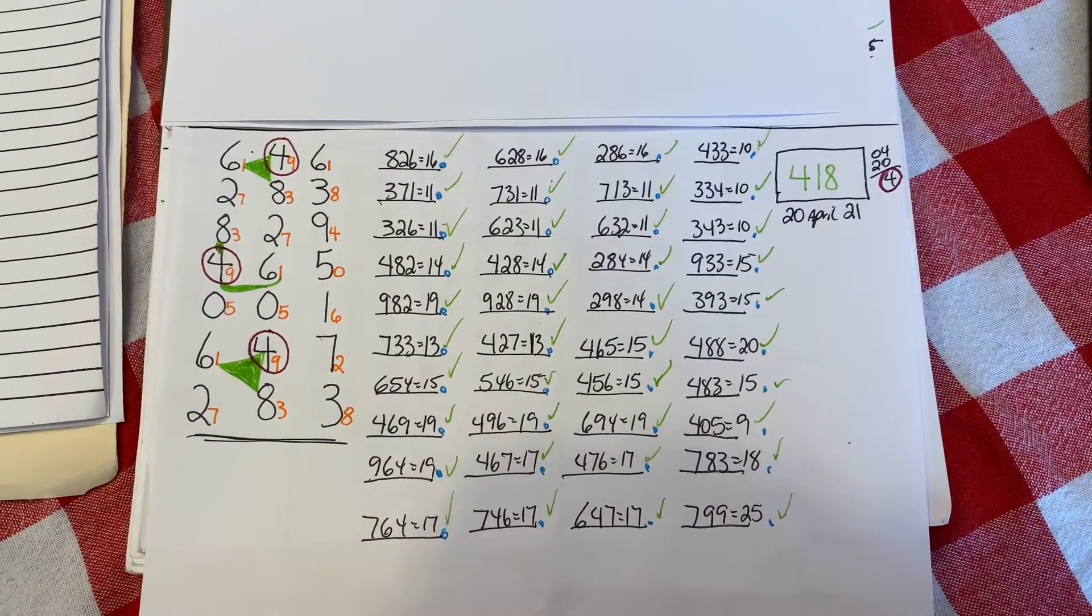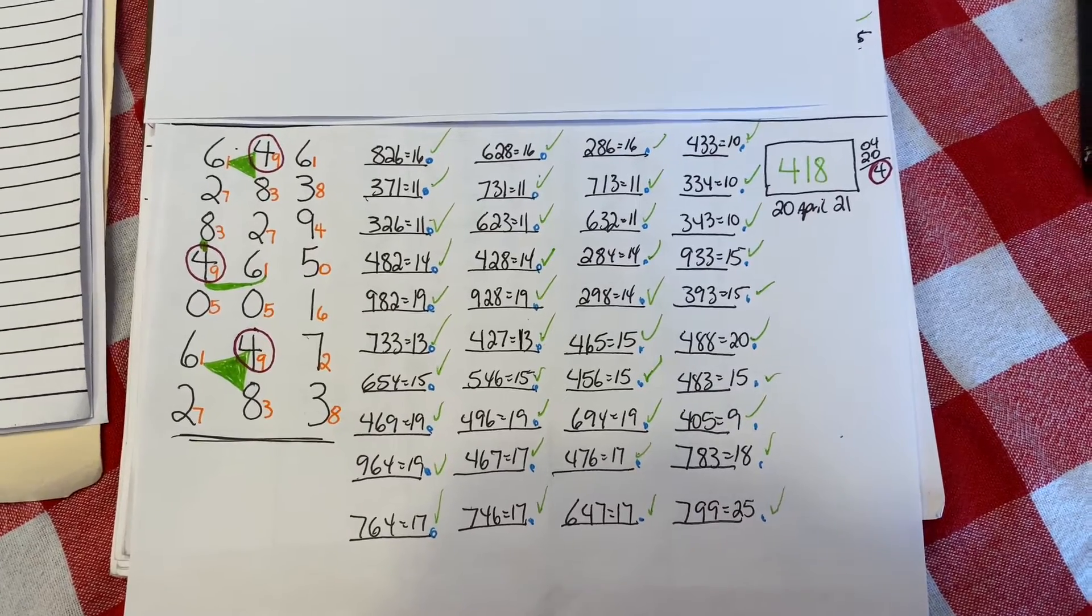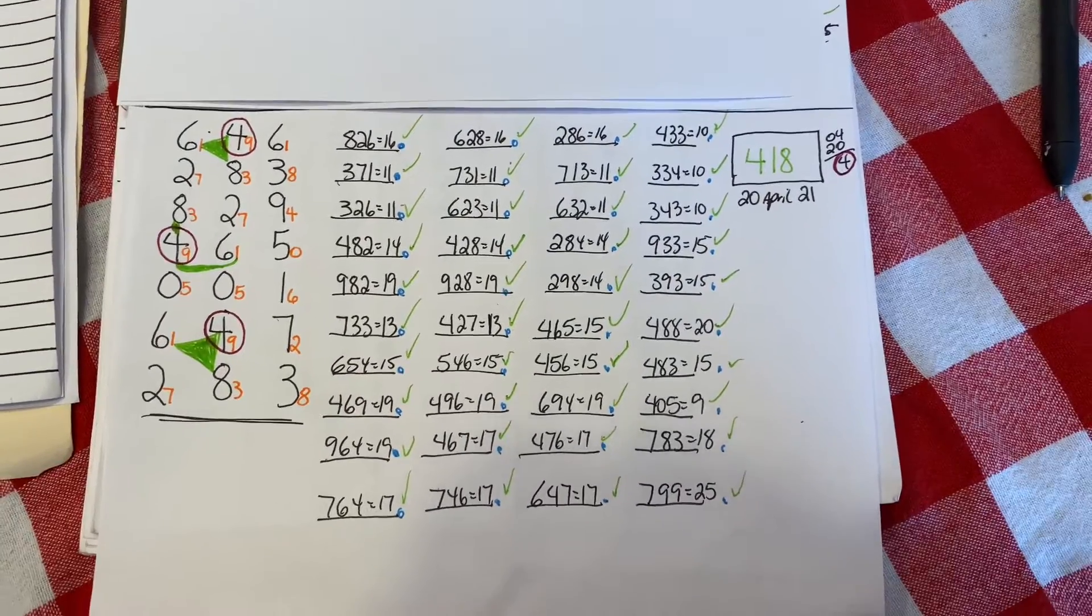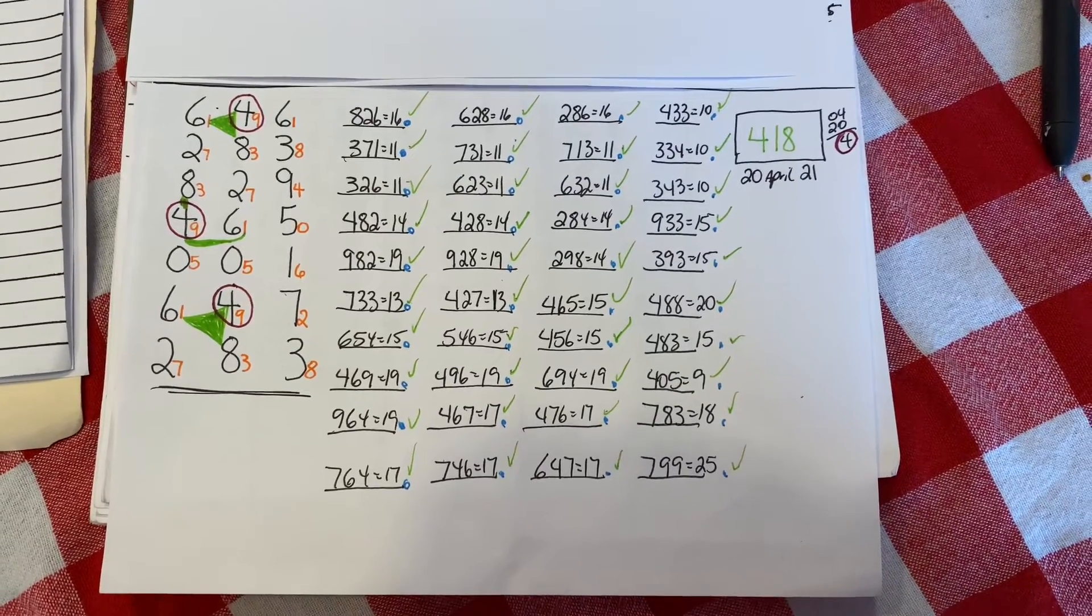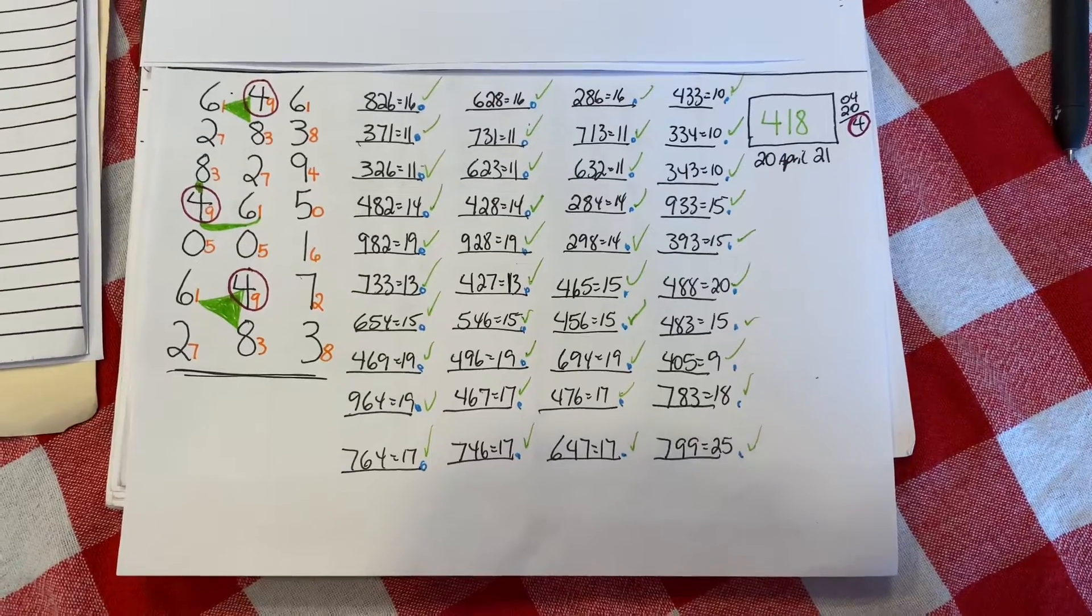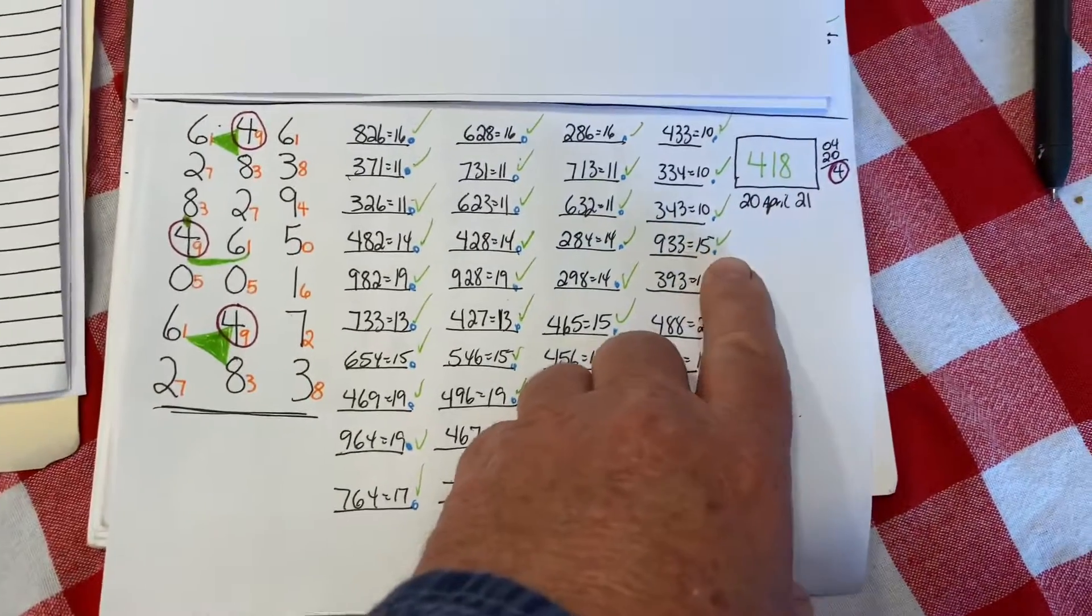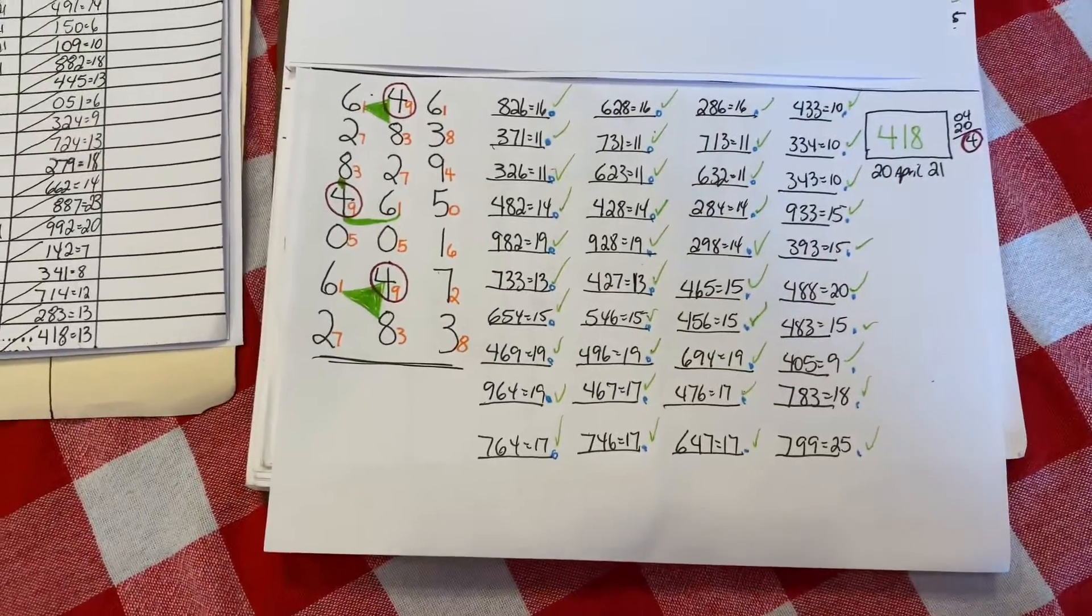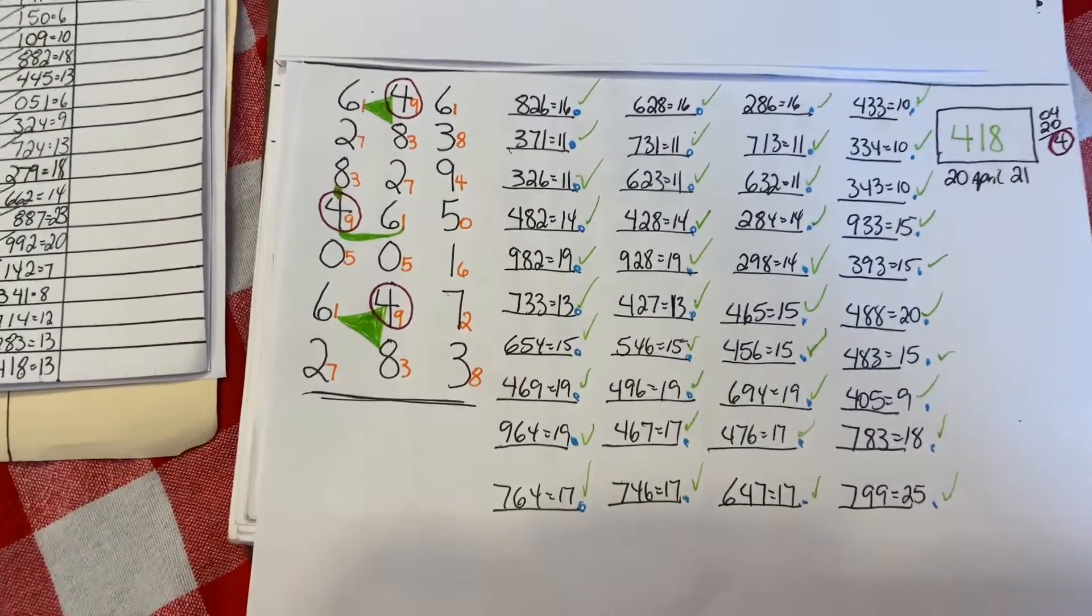Hello everybody, this is Chris the Ladder Guy. This is on the 646 rundown. I'm going to show you the results from yesterday, which was the 20th of April this year, 2021. These are the numbers.